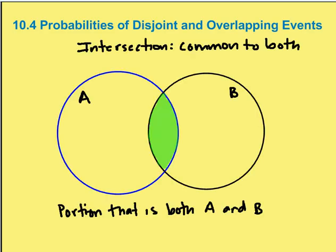First is that the definition of an intersection is the area that's going to be common to both events. In this case, we have two circles. They represent events A and B. The portion that is both A and B is called the intersection. Now, you can think of it in this way, but I also like to think of it in terms of a street intersection.